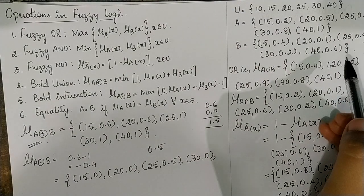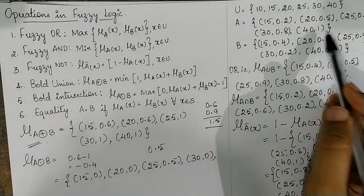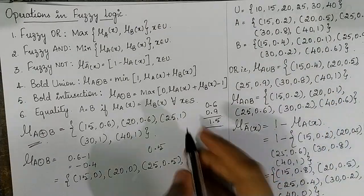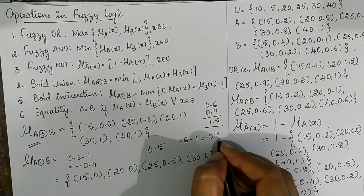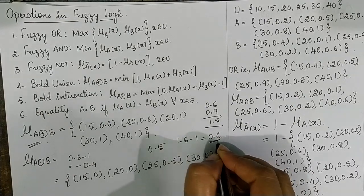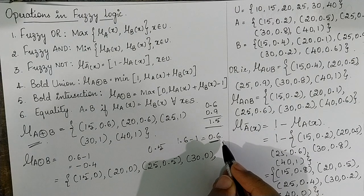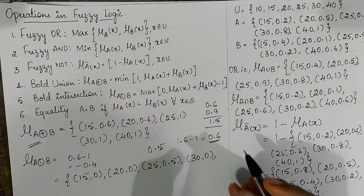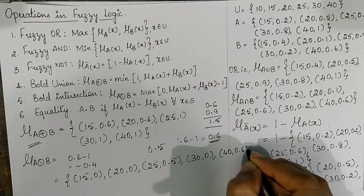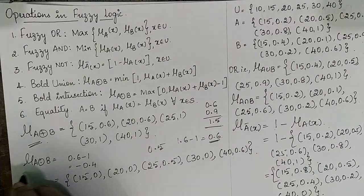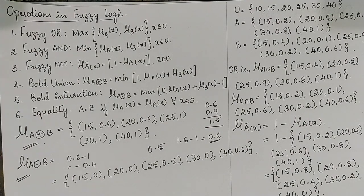For 40: 1+0.6=1.6; 1.6−1=0.6; compare 0 and 0.6 — maximum is 0.6, so 40→0.6. This is about the bold intersection operation.